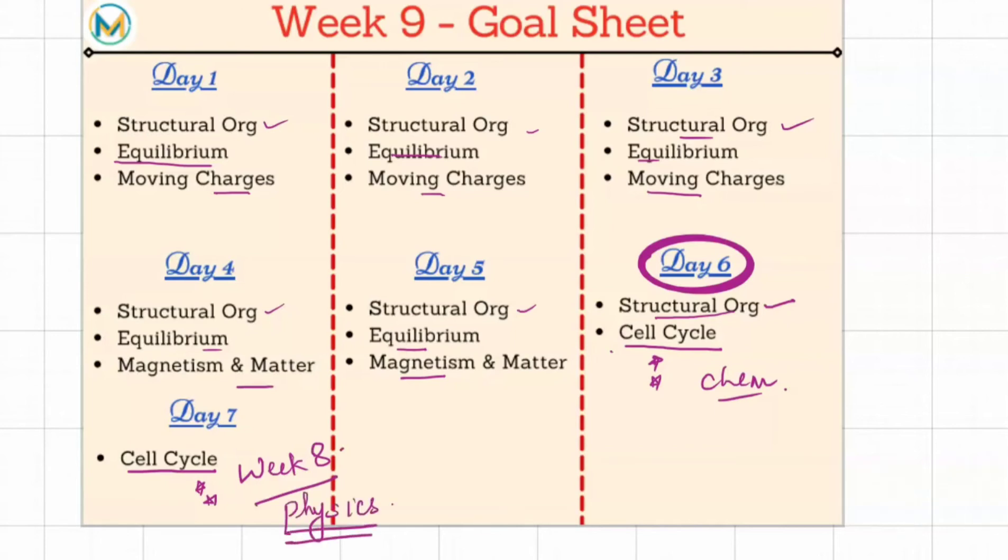So this week we will be doing 50 MCQs of bio, 45 MCQs of chem, and let's do 20 MCQs of physics. On day six we will be doing around 100 MCQs of bio itself because we have two different topics, 50-50 each.